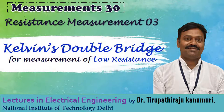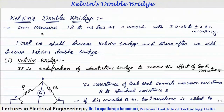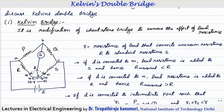Today we are going to discuss Kelvin's double bridge. This can be used to measure extremely low values of resistance, up to about 0.00001 ohms, with very high accuracy of 0.05 to 0.2 percentage. Before understanding the concept of the Kelvin double bridge, let us first discuss the Kelvin bridge, after which we will go for the Kelvin double bridge.